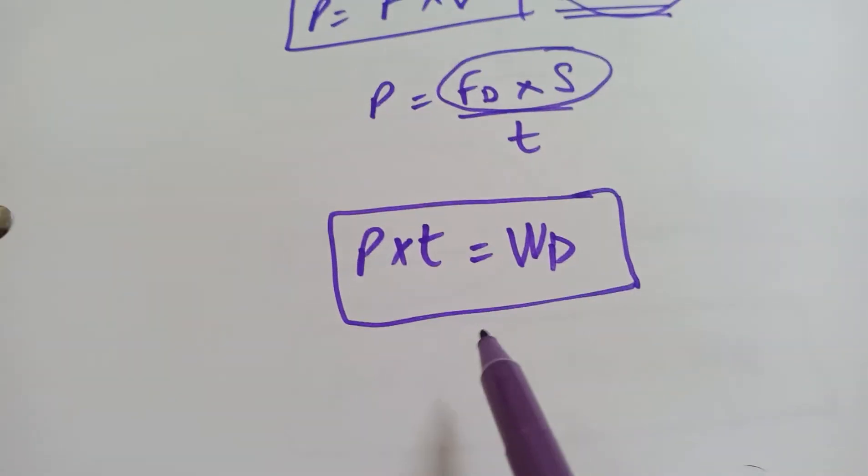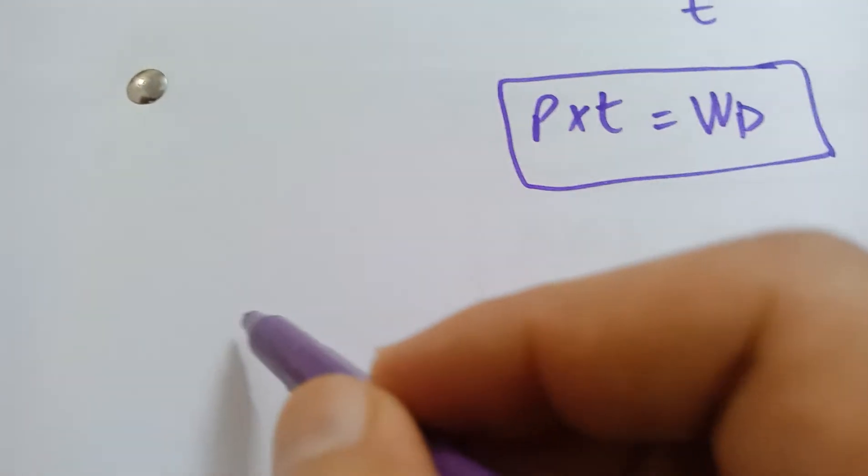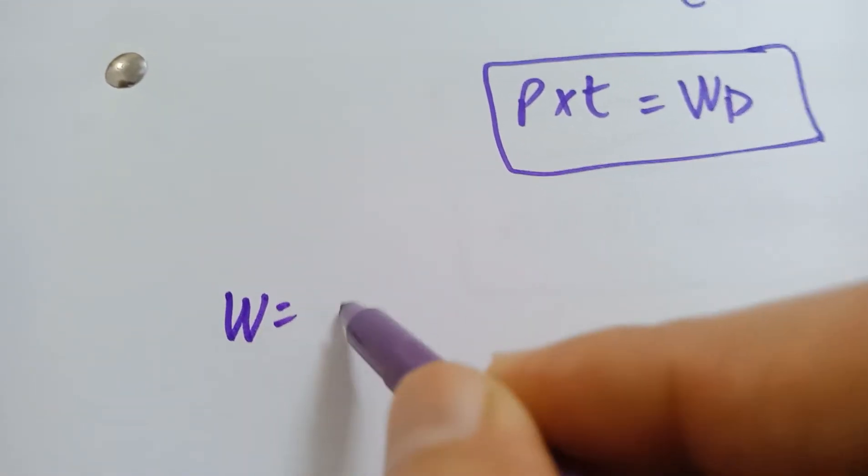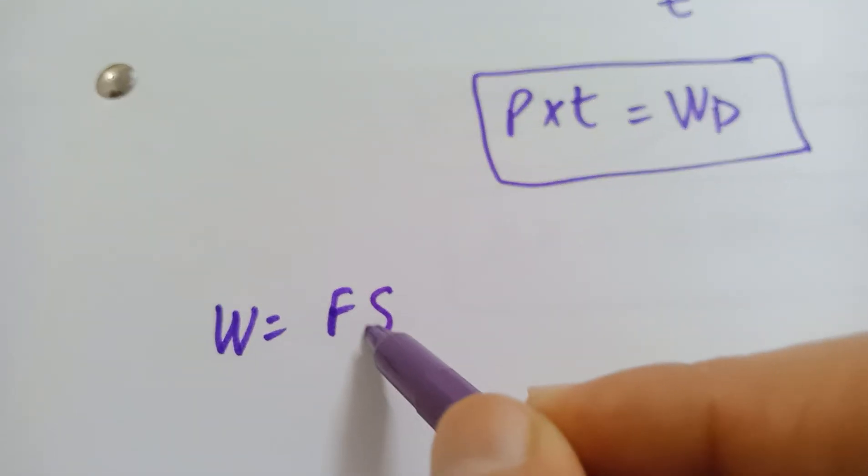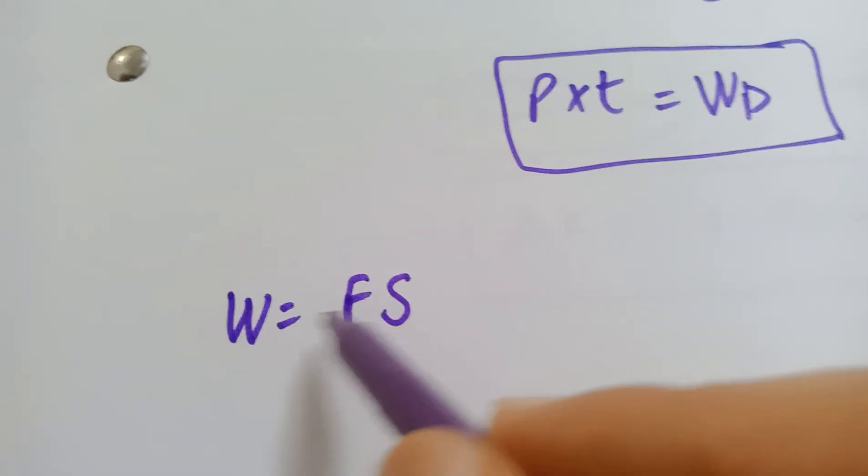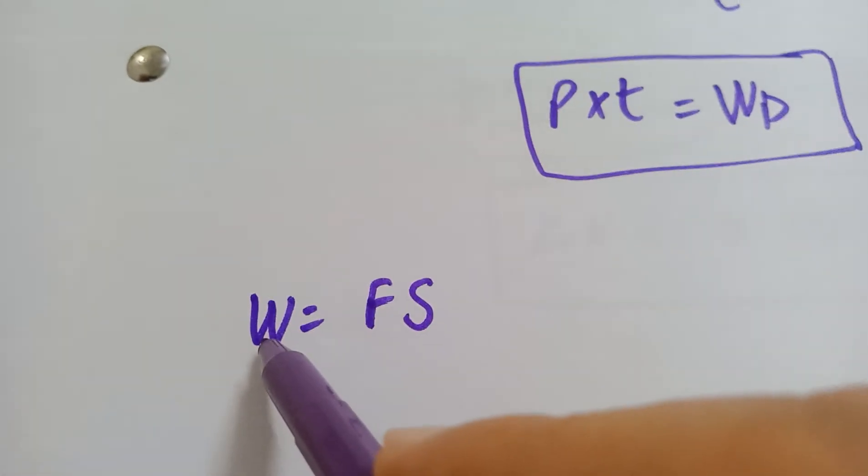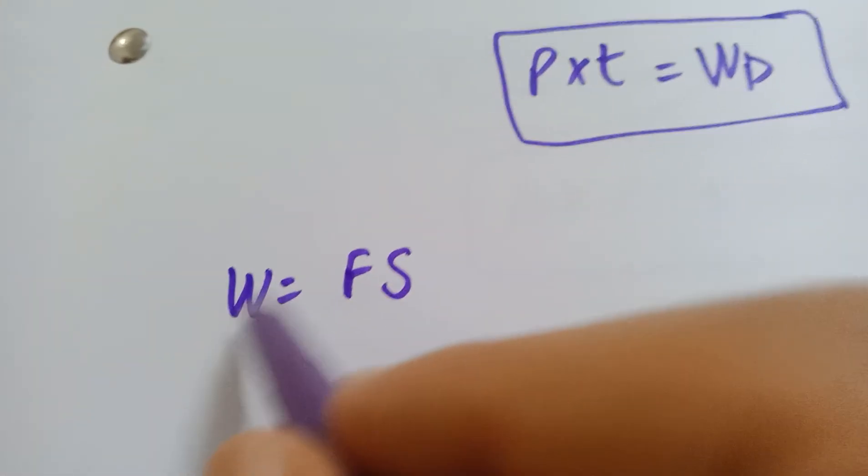Let me list down the formulas that we have covered so far. We started by saying that work is equal to F into S or F into D. This F can be the driving force, then this work would be the work done with the driving force. If it's a resisting force, then this would be the work against the resisting force.